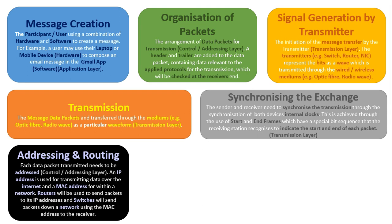Addressing and routing is one of those stages that happens partly at the beginning and partly at the end. Addressing takes place at the communication control and addressing stage before the message is sent, but also after the message has been sent to ensure it reached the correct location. Each data packet needs to be addressed — we use IP addresses for transmitting data over the internet and MAC addresses for within a network. Routers send packets to their IP address, and switches send packets within a network using MAC addresses. The IP address sends the data to a specific network, then the MAC address delivers it within that network to a specific device.